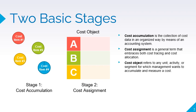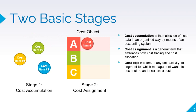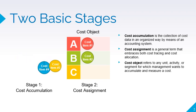Suppose that cost item number 1, cost item number 2, and cost item number 3 are incurred solely in relation to cost object A, cost object B, and cost object C respectively. Hence, cost item number 1 is traced to cost object A, cost item number 2 is traced to cost object B, and cost item number 3 is traced to cost object C. Suppose that cost item number 4 is incurred for all three cost objects. Hence, cost item number 4 is allocated to all three cost objects.